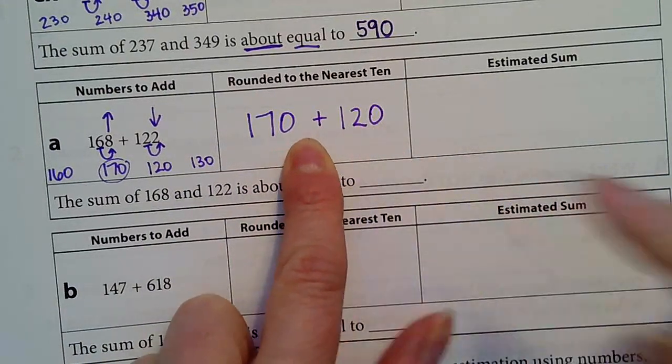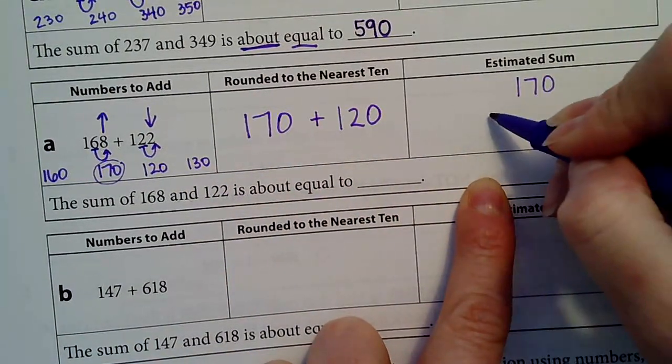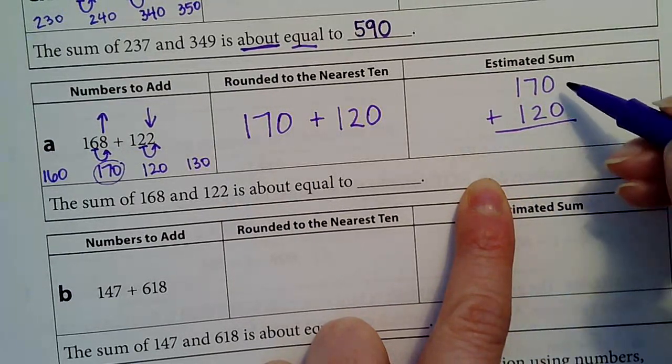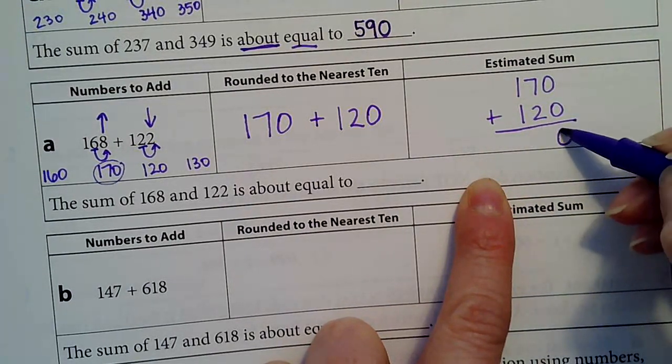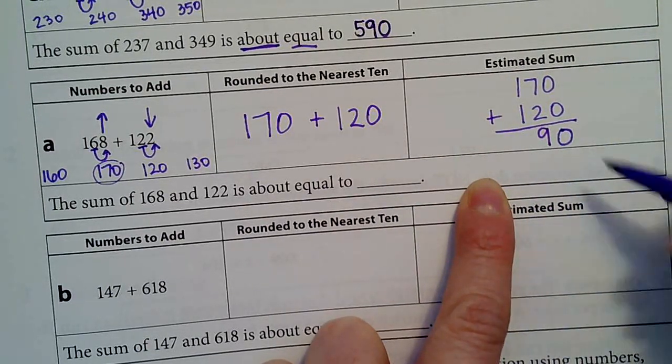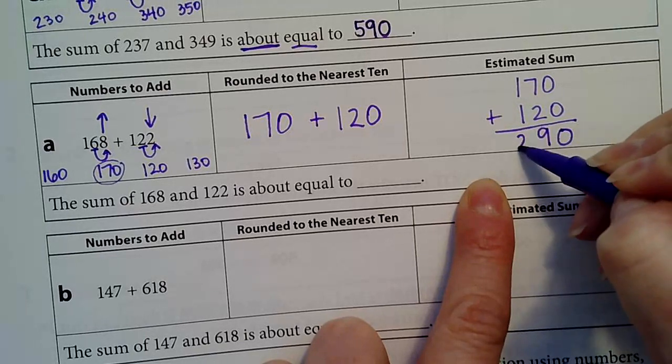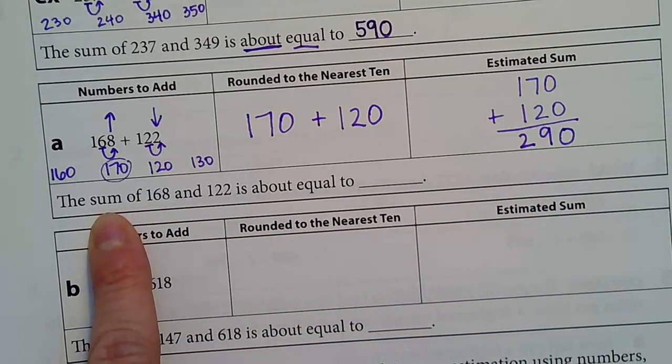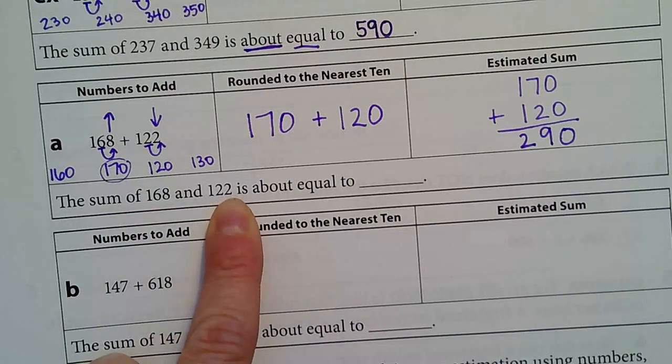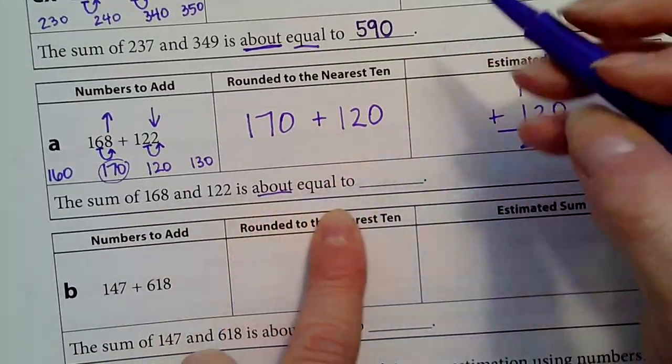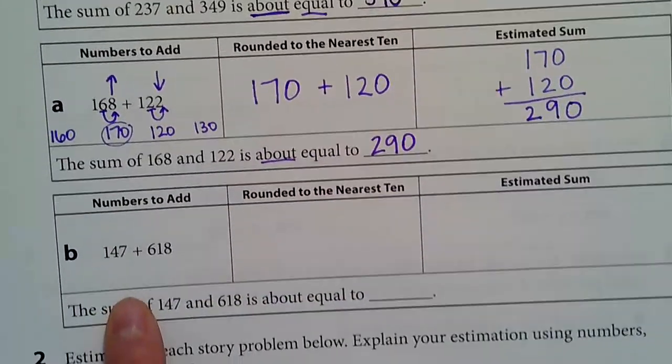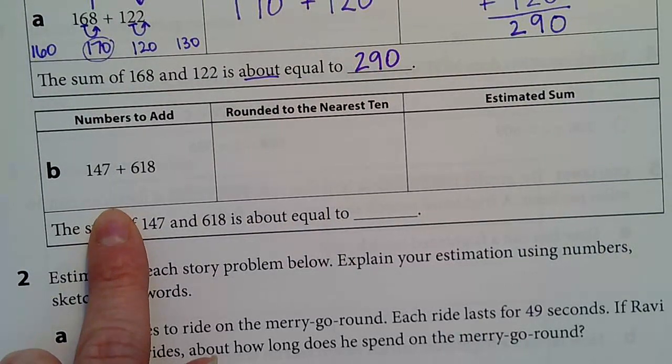Now I have to add these two numbers together. I'm going to write them this way, up and down. I add zero and zero and get zero. I add seven and two and get nine. I add one and one and get two. Then I put my answer here. The sum of 168 and 122 is about equal to 290. That's my estimate. You're going to do the same thing here on your own.